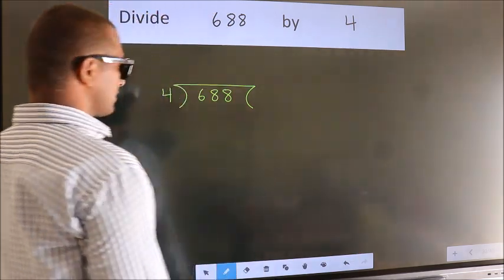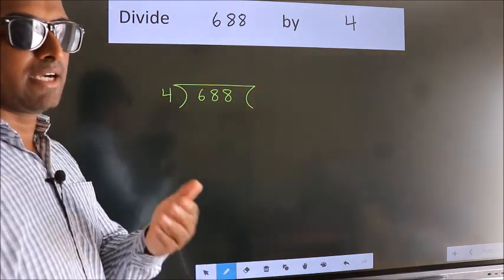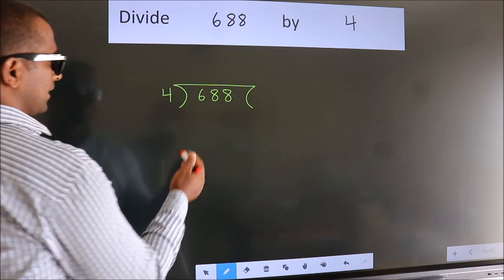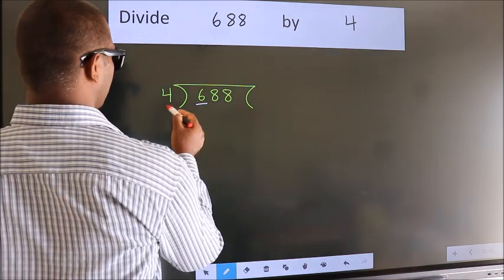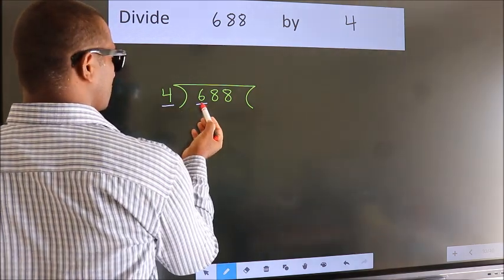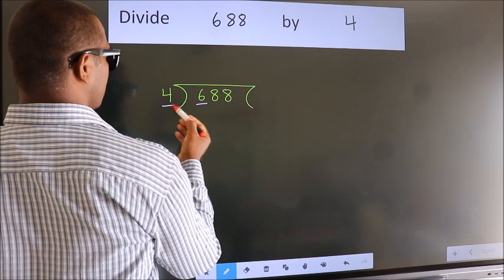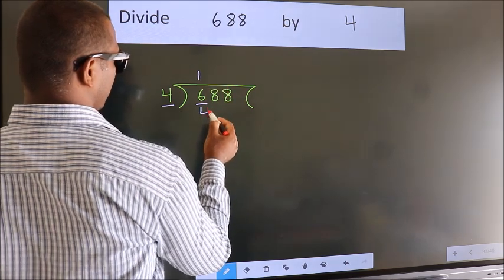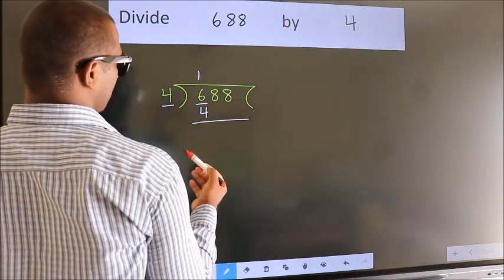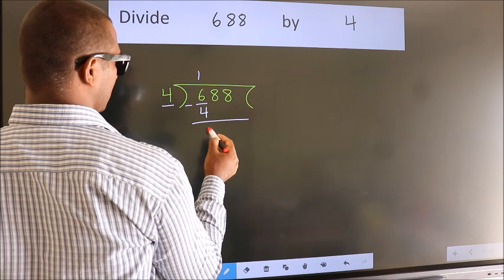This is your step 1. Next, here we have 6, here 4. A number close to 6 in 4 table is 4 once 4. Now, we should subtract. We get 2.